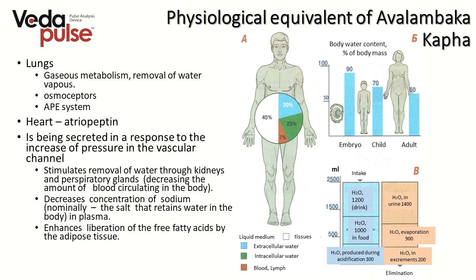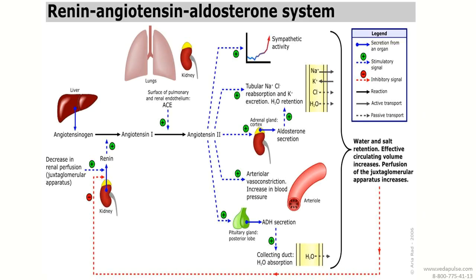The heart produces a hormone called atriopeptin in the right atrium in response to changes in water balance. Entering the kidneys, atriopeptin makes them remove the excess of salts. Regarding the renin-angiotensin-aldosterone system: the chain of processes ends with production of the vasoconstrictor hormone angiotensin II, which activates sympathetic activity connected with the growth of fire, and produces aldosterone through which angiotensin II controls mineral metabolism.